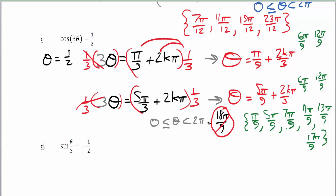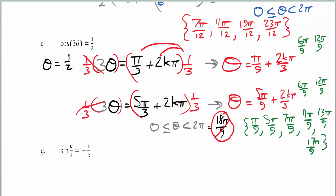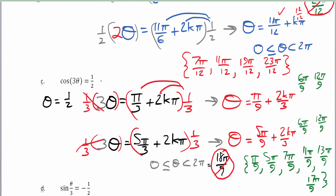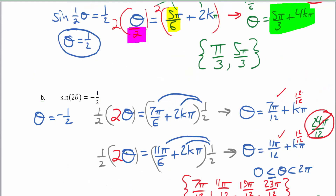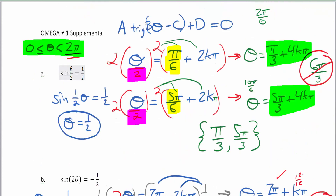You might notice that 3θ gave 6 answers and 2θ gave 4 answers. There's a common pattern: theta has 2 answers, and doubling or tripling theta doubles or triples the number of answers. This pattern doesn't work for every scalar, but it works for most of them.